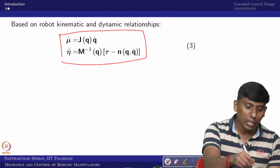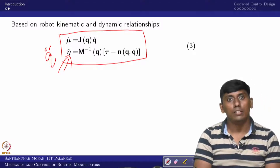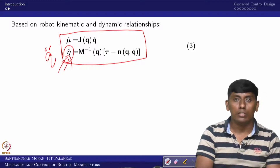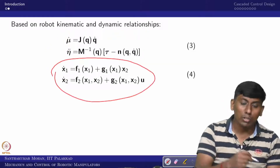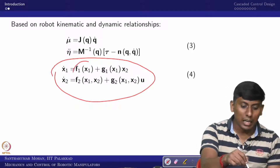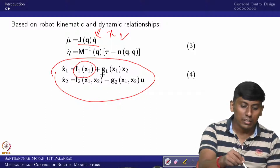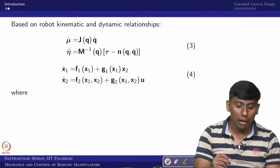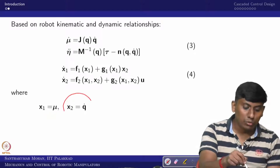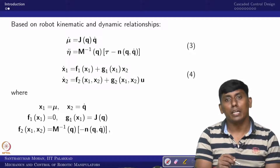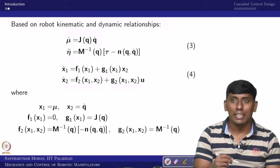We can rewrite eta double dot as q double dot for consistency, since most of the robotic community uses eta double dot while we conventionally use q double dot. In that case, we can get x1 dot and x2 dot in this form. We can see that f1 of x1 has no value here since the first subsystem relates to x2. Assuming x1 is mu and x2 is q dot, we can find the other variables accordingly.